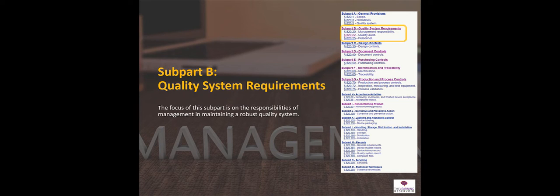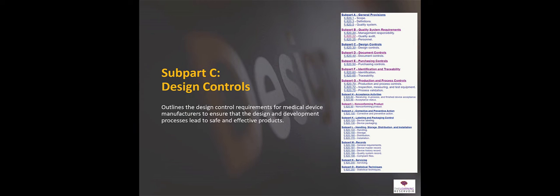Sub-part B covers quality system requirements. Here we're talking about management responsibility. As we know, management is key to ensuring that you have an effective quality management system — you need total buy-in from management if you want to achieve that. Sub-part B also covers quality audits and personnel.